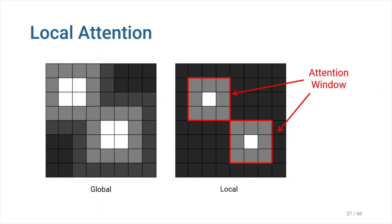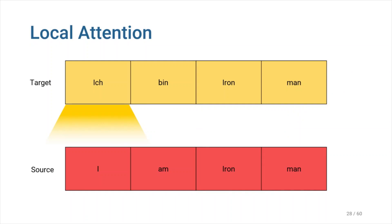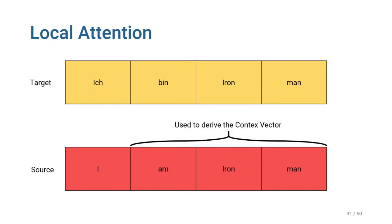Chapter 3: Local Attention. The attention weights in the global attention model are distributed softly across all portions of the source. The core idea behind the local attention model, on the other hand, is to find an attention point within the input sequence, select a window around it, and then pay attention to that portion of the input. At time t, the model produces an aligned location pt for each target expression. The context vector ct is then derived as a weighted average over the set of source hidden states within the window pt minus d and pt plus d, where d is empirically selected. pt can be chosen in two ways: monotonic and predictive.